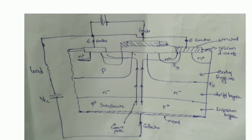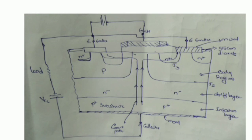In the construction of IGBT, the P-plus substrate is called the injection layer because it injects holes into the N-minus layer. The N-minus layer is called the drift region. The thickness of the N-minus layer determines the voltage-blocking capability of the IGBT. The P-layer is called the body of the IGBT. The N-minus layer is between the P-plus and P-regions to accommodate the depletion layer of the P–N-minus junction.